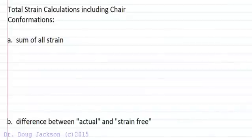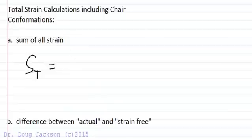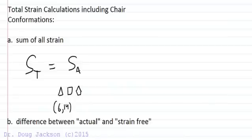Let's talk about what total strain means and what calculations look like involving total strain, including chair conformation. Total strain is equal to the sum of its parts. We have strain due to bond angles — for rings like cyclopropane, butane, or pentane — any ring size except cyclohexane and a 14-membered ring, which are strain free. We're given a table of values for these angle strain amounts, and angle strain is one component.